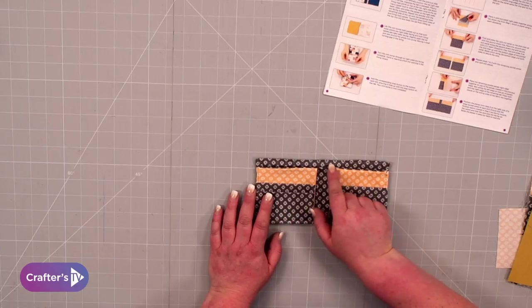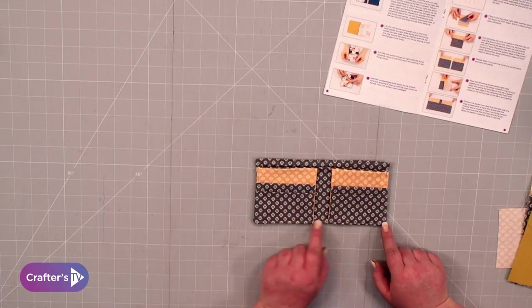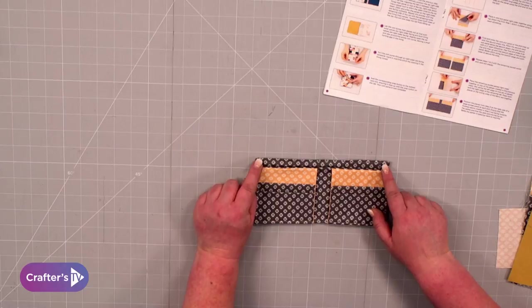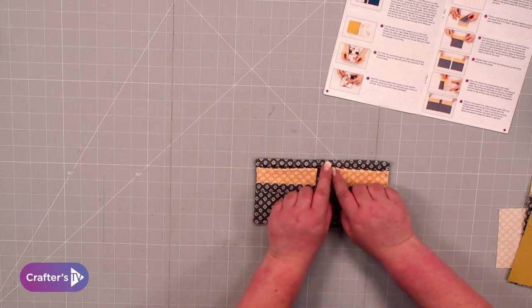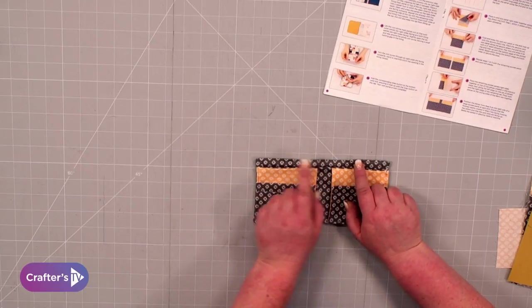Then you're going to take it to the machine and topstitch all the way around the outside of the wallet. What that does is it gives it that lovely professional finish, but at the same time closes that gap, so there's no hand stitching to do.